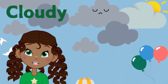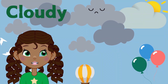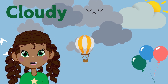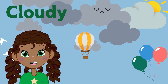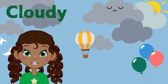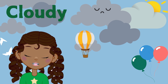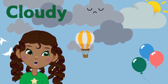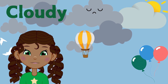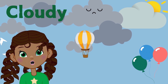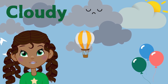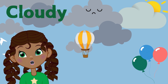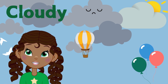Mother Nature brings us cloudy days when lots of tiny water droplets or ice crystals gather high up in the sky. These droplets form big, fluffy clouds that block the sunlight, making the day look gray and shadowy. Even though we can't see the sun, it's still up there behind the clouds.